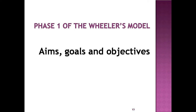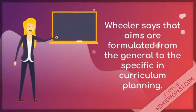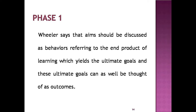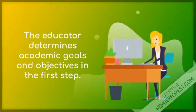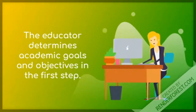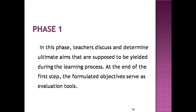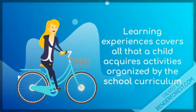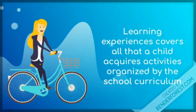Aims, goals, and objectives. Wheeler says that aims are formulated from the general to the specific in curriculum planning. Aims should be discussed as behaviors referring to the end product of learning, which yields the ultimate goals, and these ultimate goals can also be thought of as outcomes. The educator determines academic goals and objectives in the first phase. Teachers discuss and determine ultimate aims that are supposed to be yielded during the learning process. At the end of the first step, the formulated objectives serve as evaluation tools, and the learning experience covers all that a child acquires through activities organized by the school curriculum.